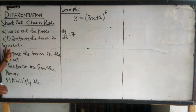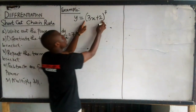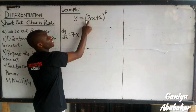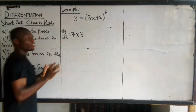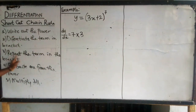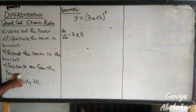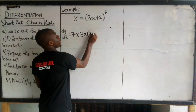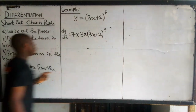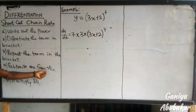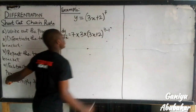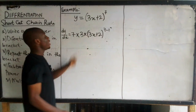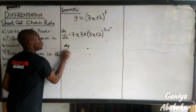Step two: differentiate the term in brackets. If I differentiate 3x + 2, I will have 3. Step three: repeat the term in brackets — multiply back by 3x + 2, all to the power 7. Step four: subtract 1 from the power, giving minus 1. Step five: multiply all. Hence, at the end, I will have dy/dx.